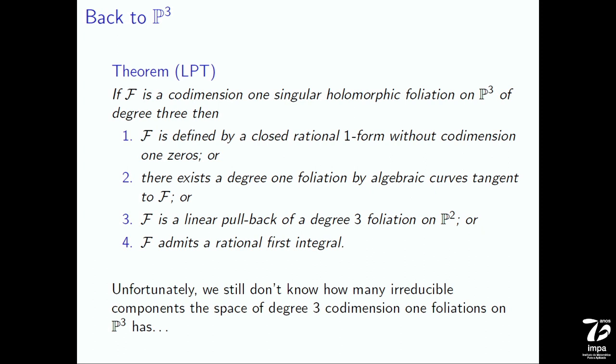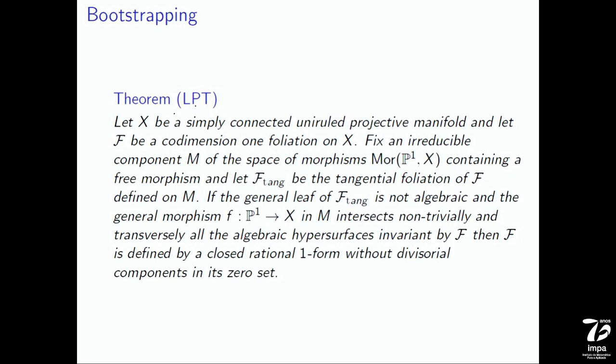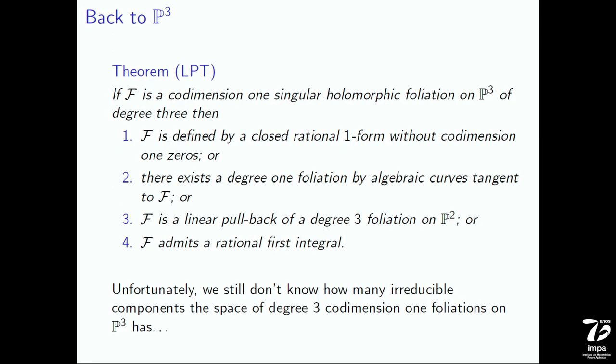The second possibility is that there exists a degree-one foliation by algebraic curves tangent to F — where degree one means defined by an algebraic action of C or C*. The third possibility is that F is a linear pullback. The fourth is that the foliation admits a rational first integral — in which case our method doesn't say much. As for the corresponding delta in each case: on P^3, delta is at most one. If delta equals one, the foliation is transversally projective but not affine. In all other cases, delta is zero and the leaves of F-tang are algebraic.